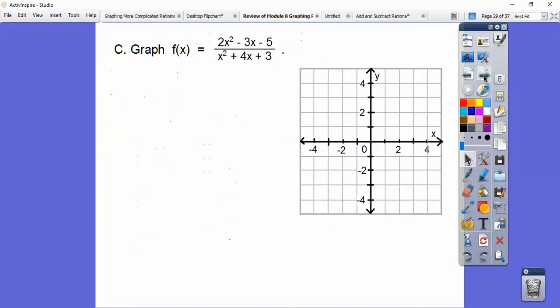All right, let's graph this guy. So here, always factor it, you guys. So let's go ahead and factor it. And the top factors to 2x minus 5, x plus 1. The bottom factors to x plus 3, x plus 1. Factors of 3 that add to 4.